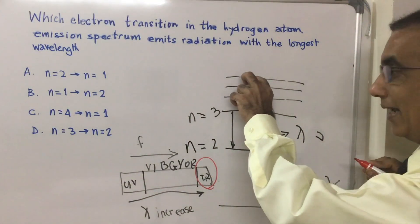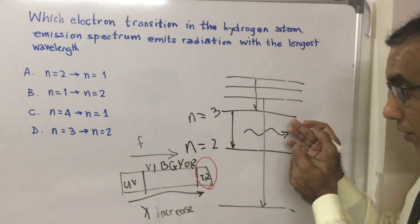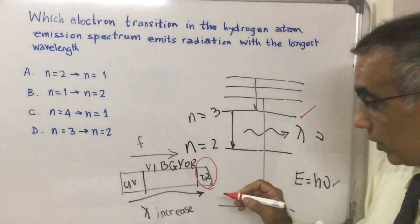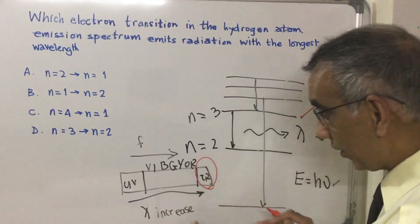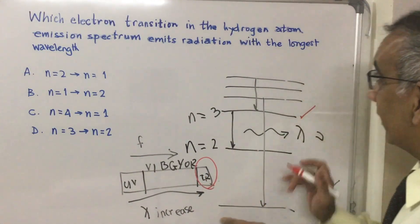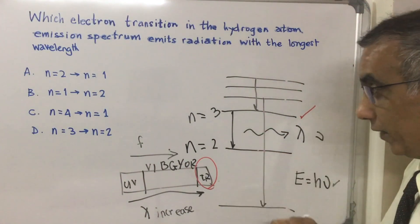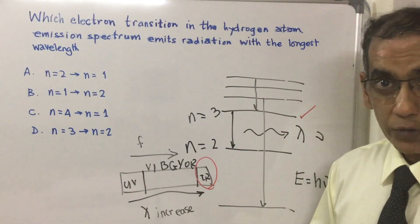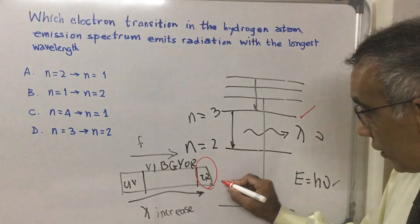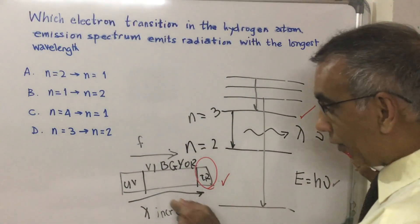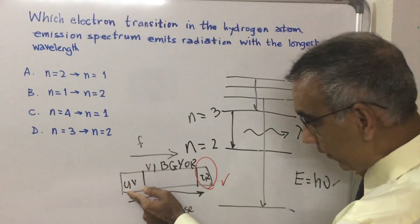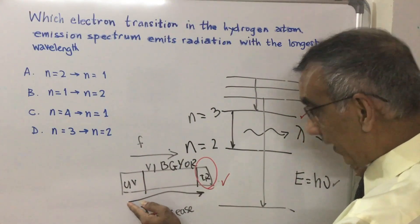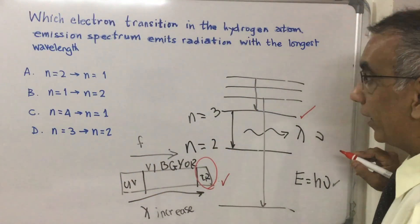This is the lowest energy transition — it gives lines in the infrared part of the spectrum. So the answer is anything with a transition to n=3, because that is where you get the highest wavelength. This entire question calls upon your knowledge of the emission spectrum of hydrogen and your knowledge of the electromagnetic spectrum — knowing that frequency is highest for ultraviolet and lowest for infrared, while wavelength is smallest for ultraviolet and longest for infrared.